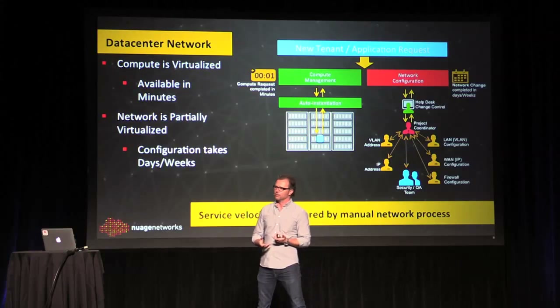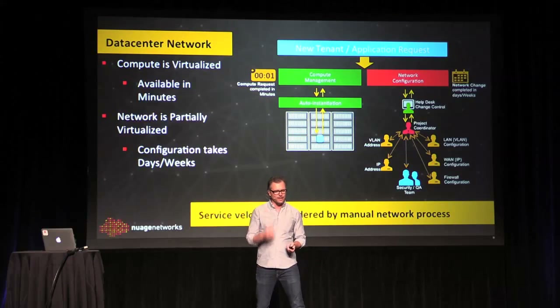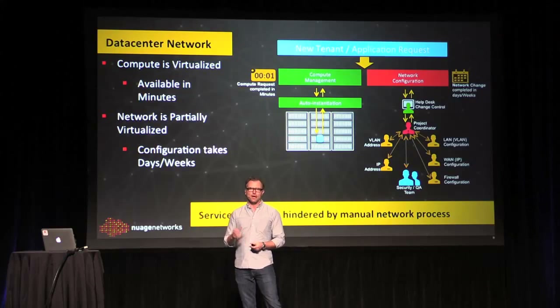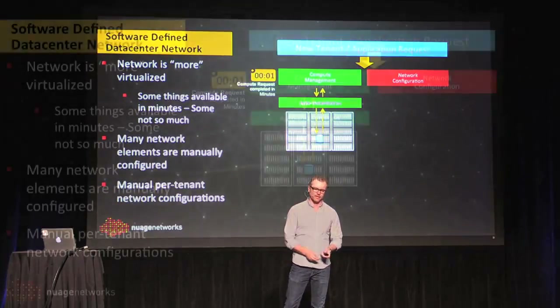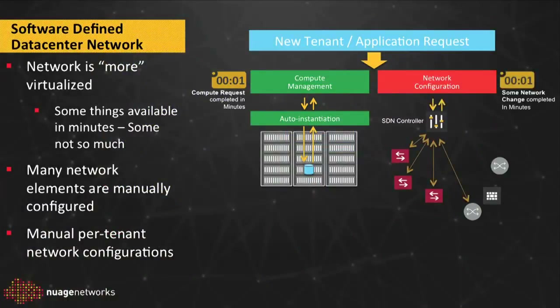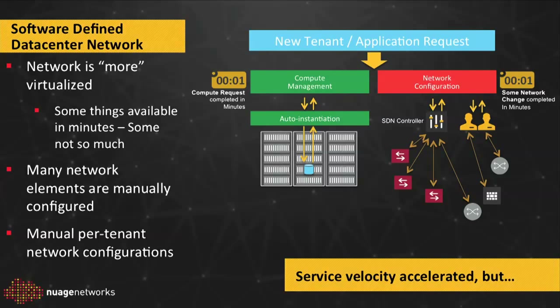The network configuration hasn't really shifted enough to match this new virtualized on-demand compute model. Service velocity and the rate at which I can deploy new services is really hindered by network manual processes and manual review processes. We've seen a lot of SDN solutions come to market that start to virtualize some resources — maybe I can auto-provision a vSwitch and do some VXLAN things between a couple of vSwitches — but I'm not automating everything just yet. If I need to talk to a WAN router, that's probably another team and another trouble ticket. Security policies are still audited by a security team, and that takes time. So we're starting to address some of these things, but we really haven't tackled the whole problem.